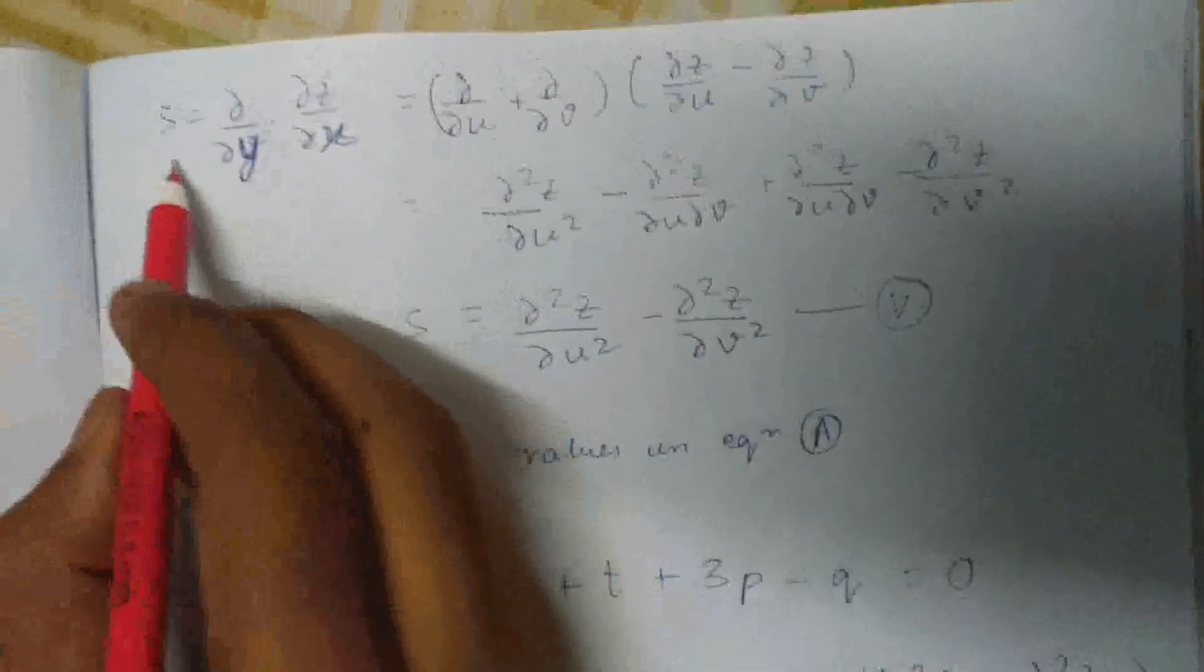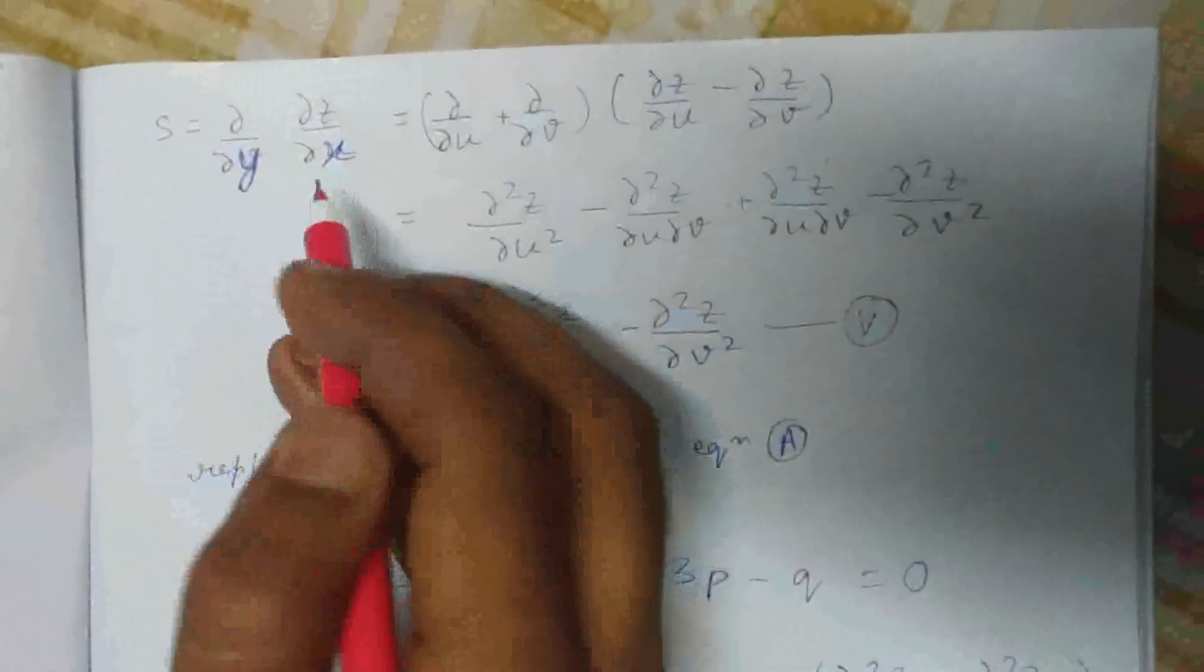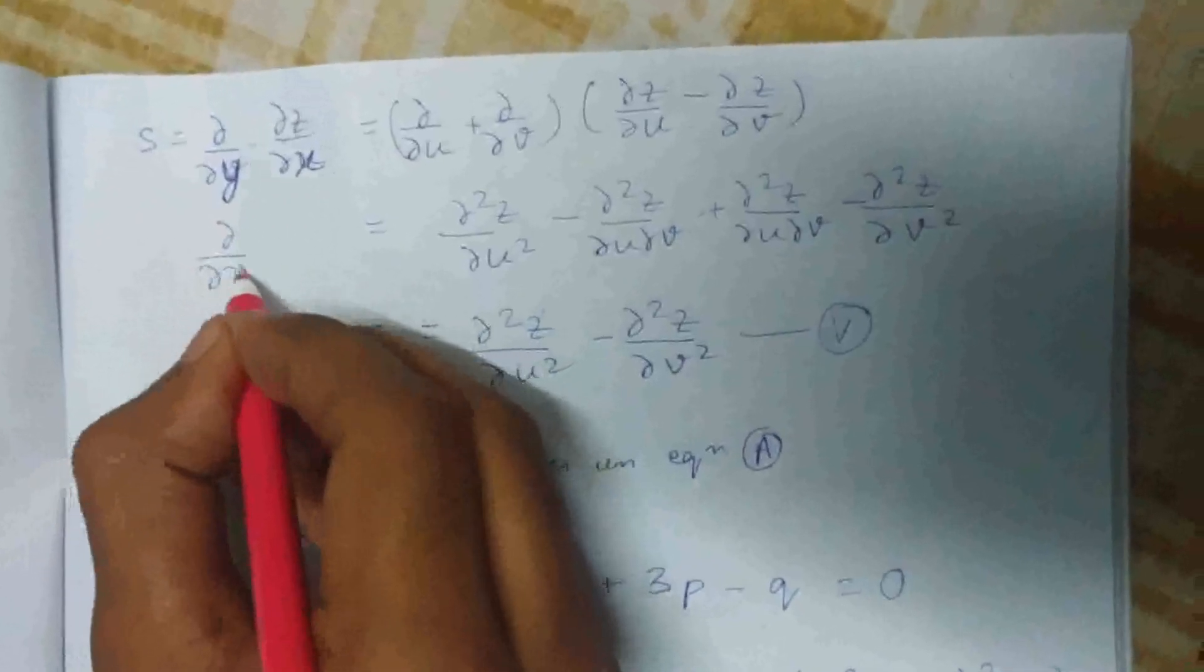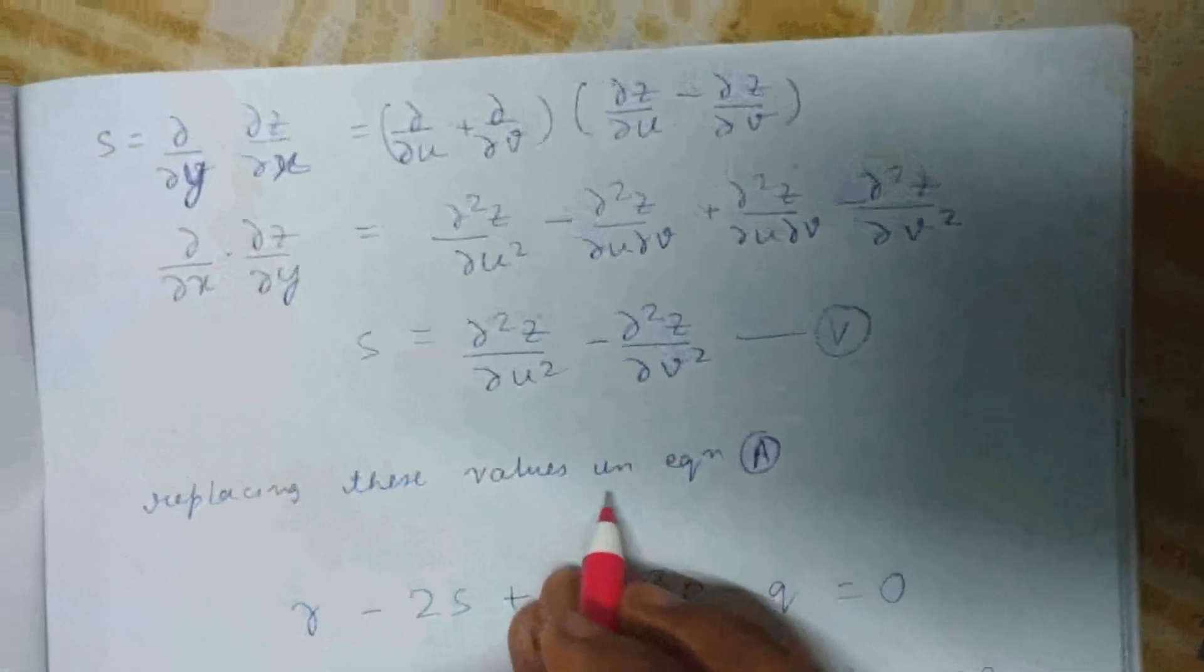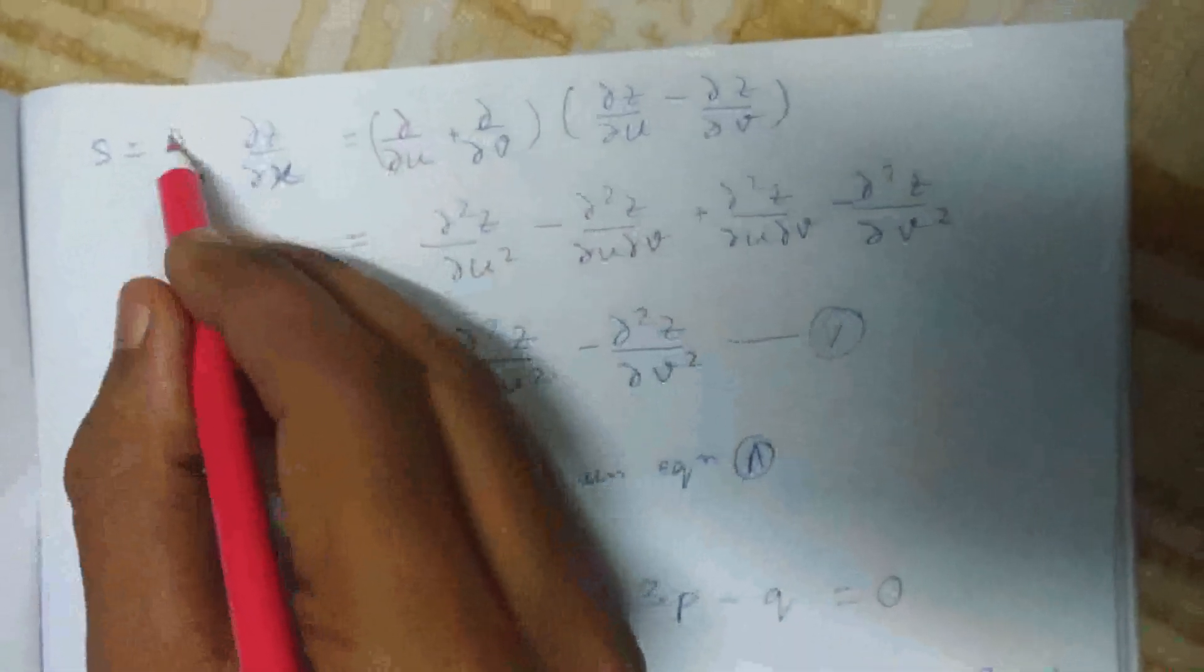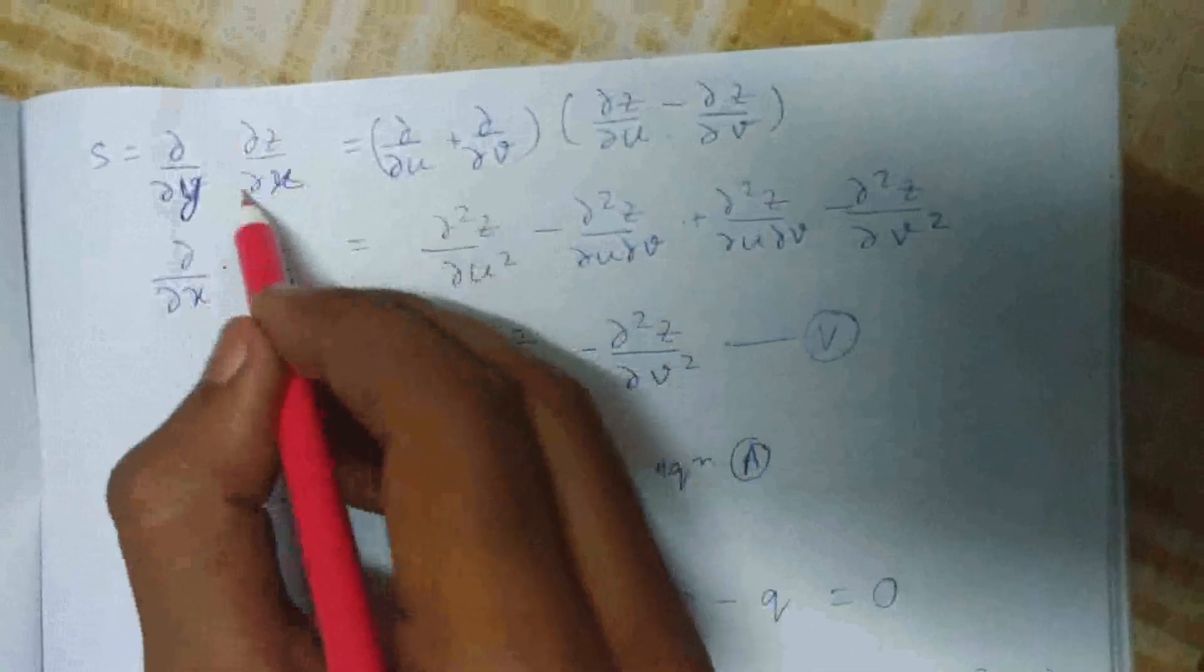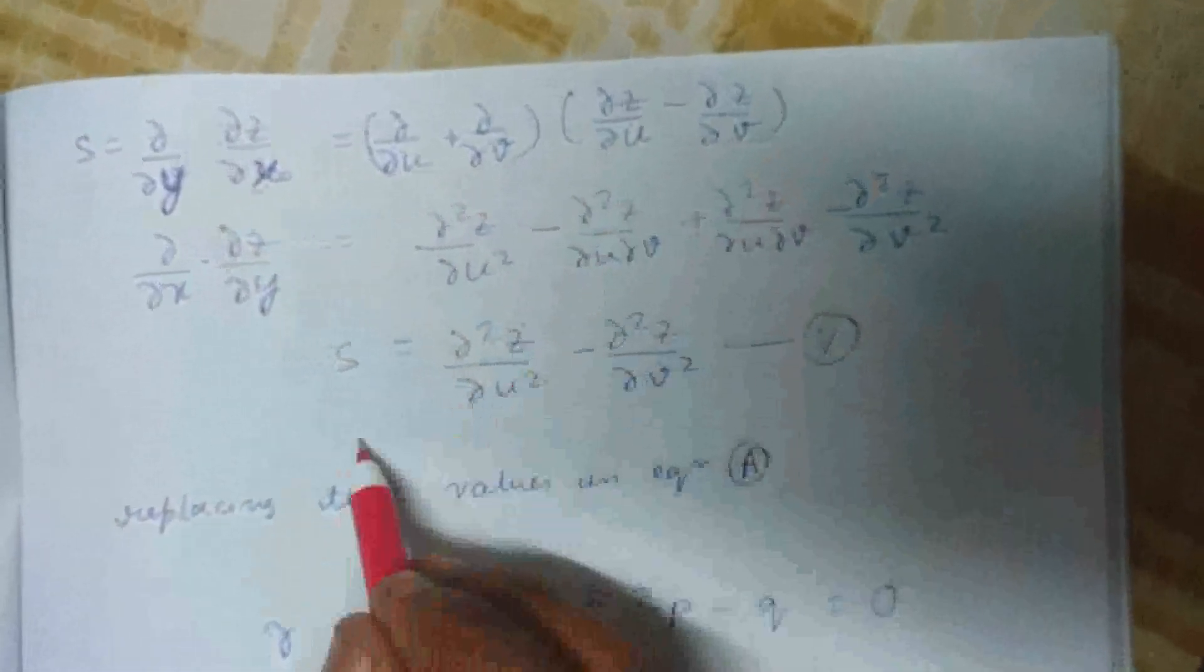Now we're going to find the value of s. S is d/dy multiplied by dz/dx, or you can also write it as d/dx times dz/dy. You're going to get the same answer in both situations. We've already found the value for this operator, and we multiply both of these and get the value of s.